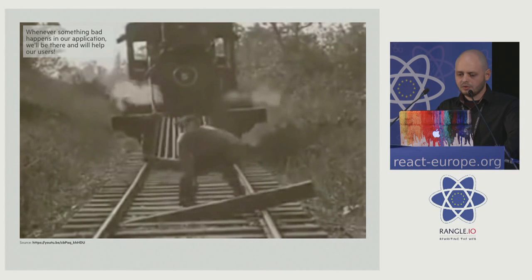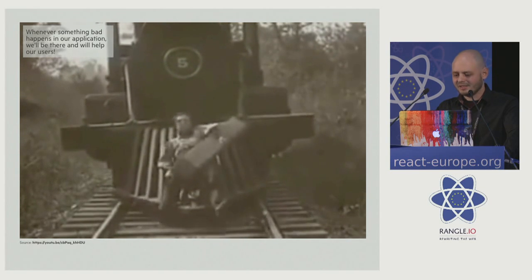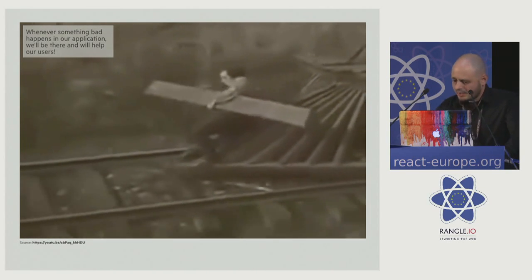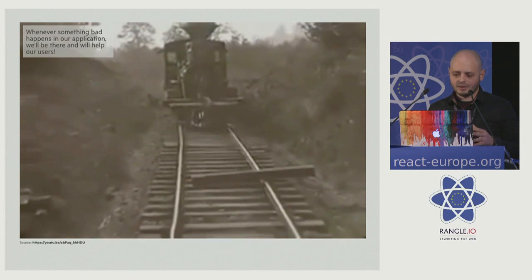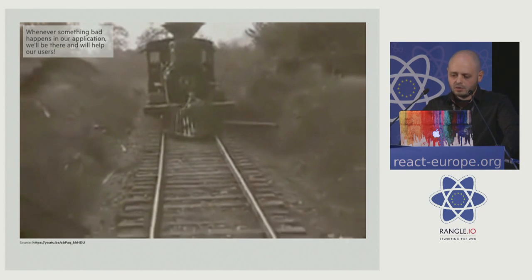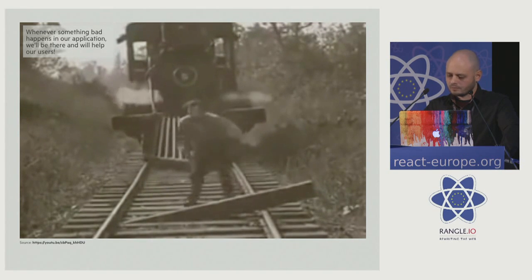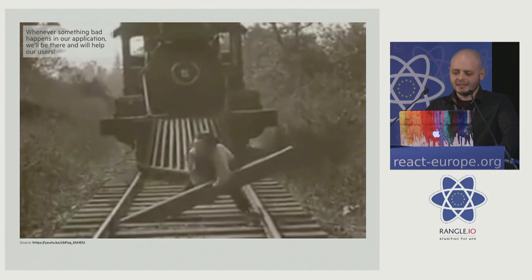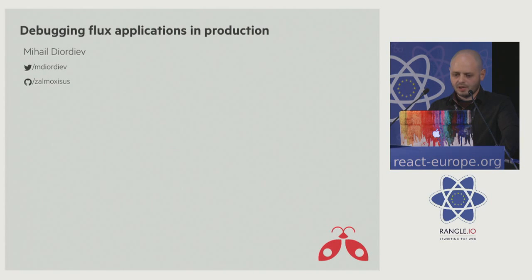So we've got lots of tools to help our users right in production. But we don't want to always respond to the same requests and deal with the same bugs again and again. What we want is a service that stores all the logs, so we know exactly what is happening inside our application at any time. It would group the requests by actions, users, bugs, and exceptions — and we would know when our interaction is really necessary. I'm working on such a service called remotedev.io. If you're interested, you can subscribe for the beta. You can find me on Twitter as @mdiordiev to ask any questions — I'd be happy to answer. Thank you.